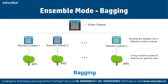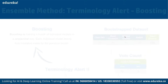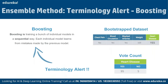We also have boosting, which is training a bunch of individual models in a sequential way. Each individual model learns from the mistakes made by the previous model, which is how they improve accuracy one by one.